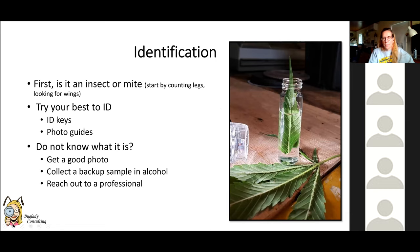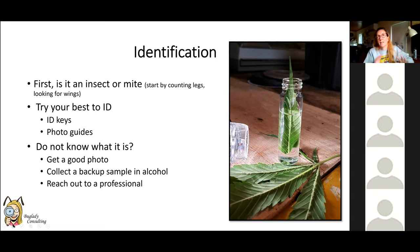The first and foremost thing — and I can't express this enough — is identification. You've got to identify what you have. The first simple step is counting legs: if it has eight legs, it's not an insect — it's a mite. If it has six legs as an adult, it's an insect. You can also look at antenna shape and whether wings are present, since mites don't have wings.